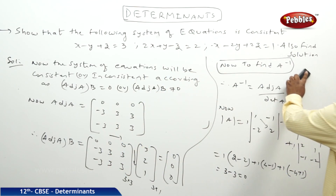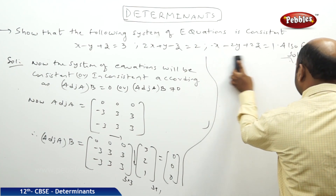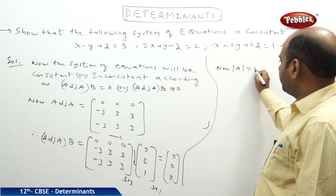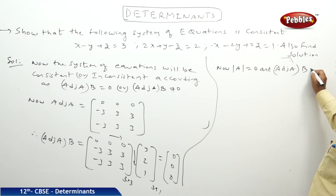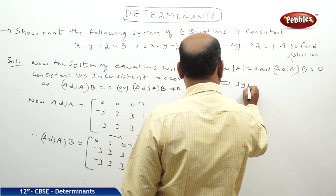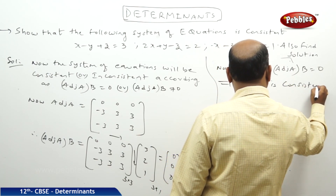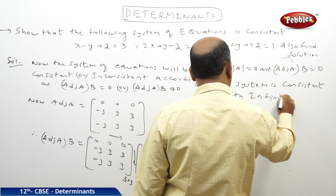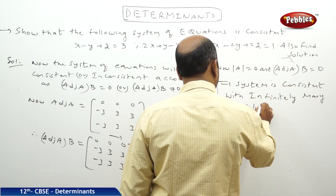Therefore we can conclude: since the determinant of A equals 0 and adjoint of A into B also equals 0, the system is consistent with infinitely many solutions.